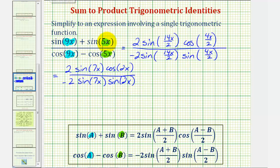Now we can go ahead and simplify. Notice here we have sine 7x over sine 7x, that simplifies to one and so does two over two. Notice how we still have a negative sign here though. So we have negative cosine 2x divided by sine 2x.